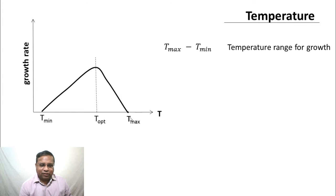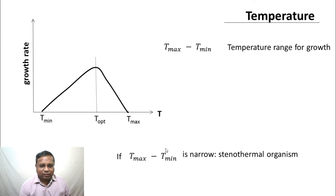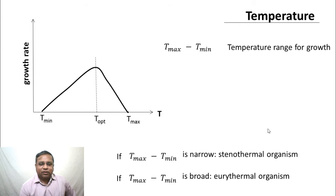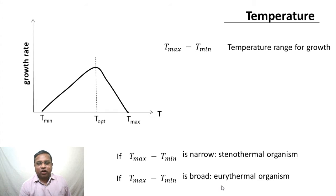The temperature range for growth is mathematically T-max minus T-min. If this range is relatively narrow — say around 10 to 20 degrees — the organism is called a stenothermal organism. If the temperature range of growth is broad and growth occurs over a wide range of temperatures, the organism is called a eurythermal organism.